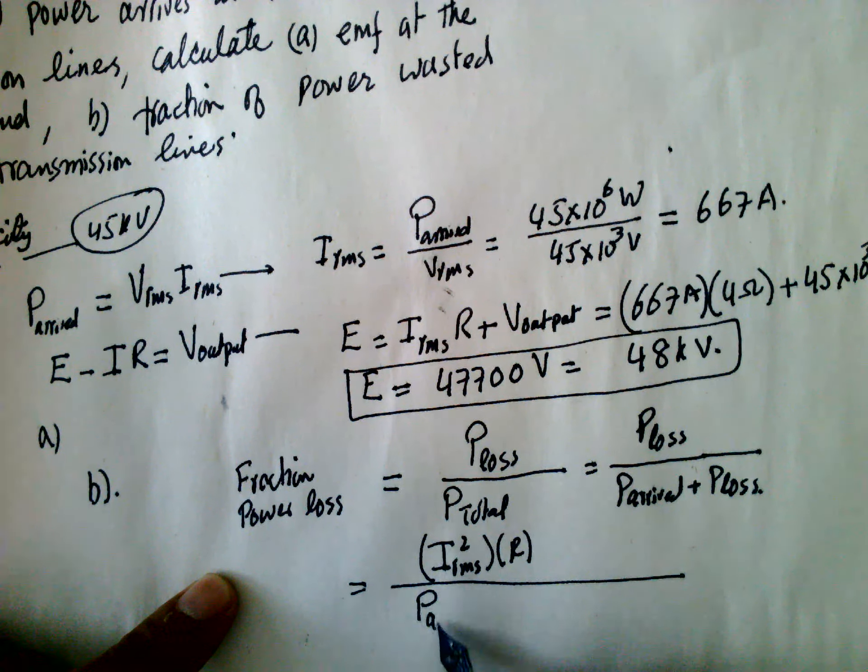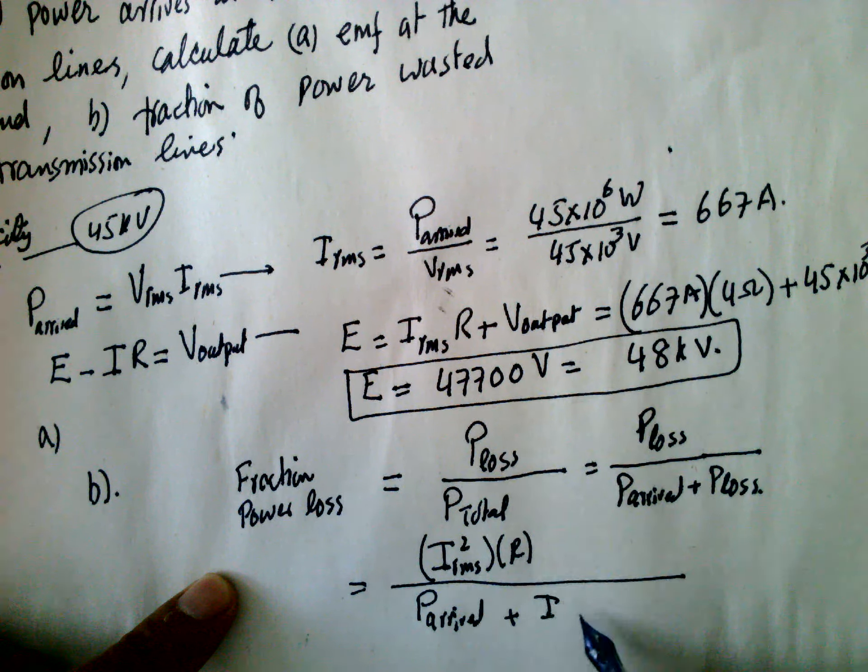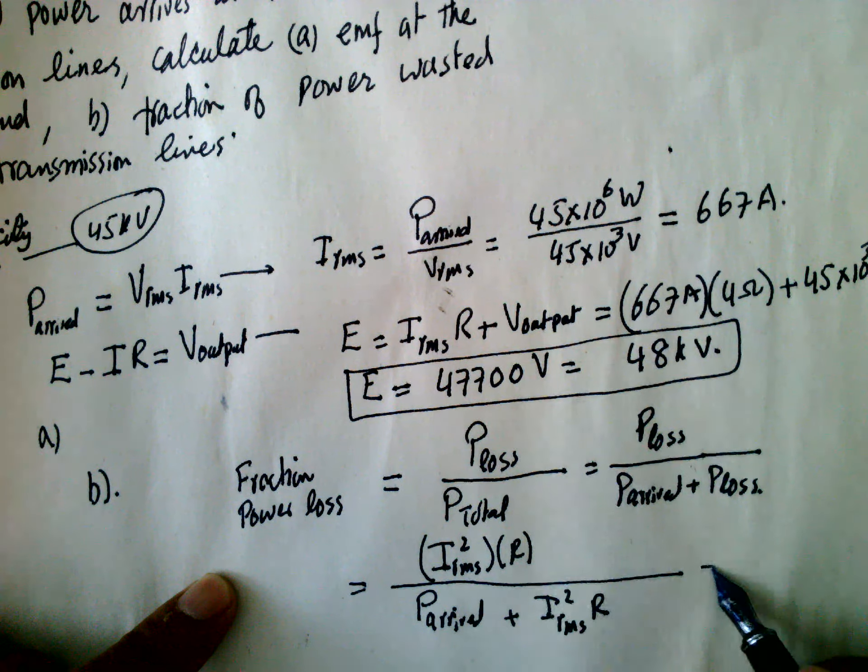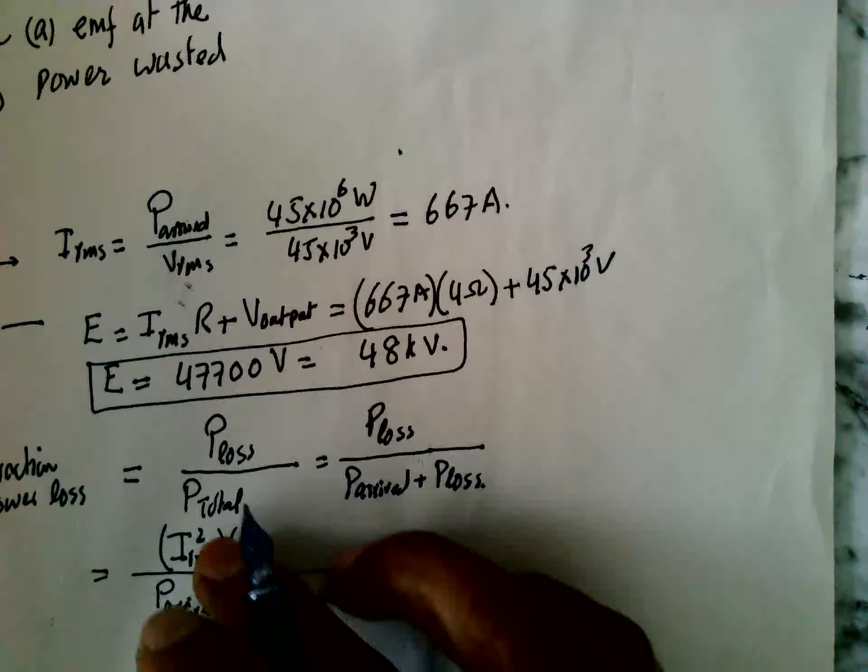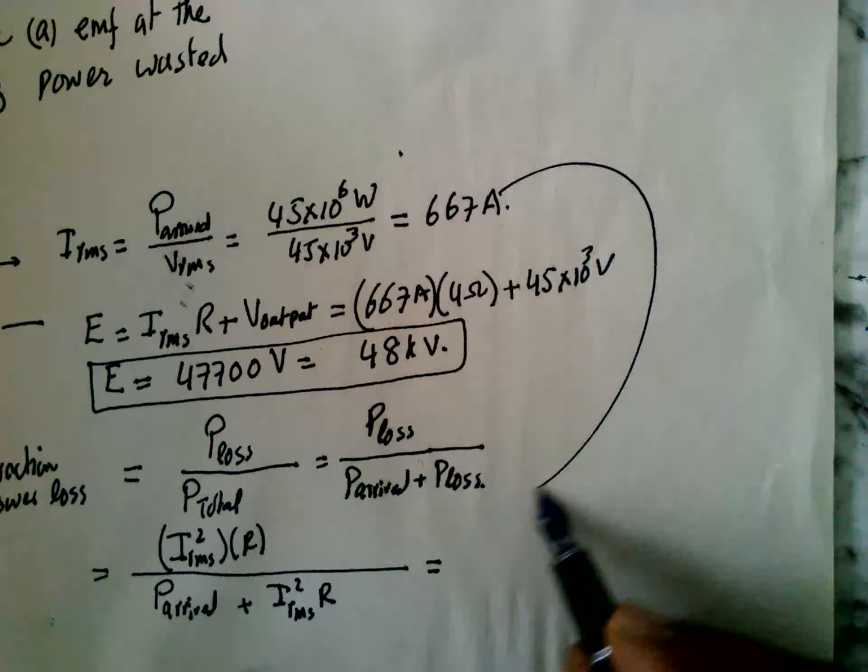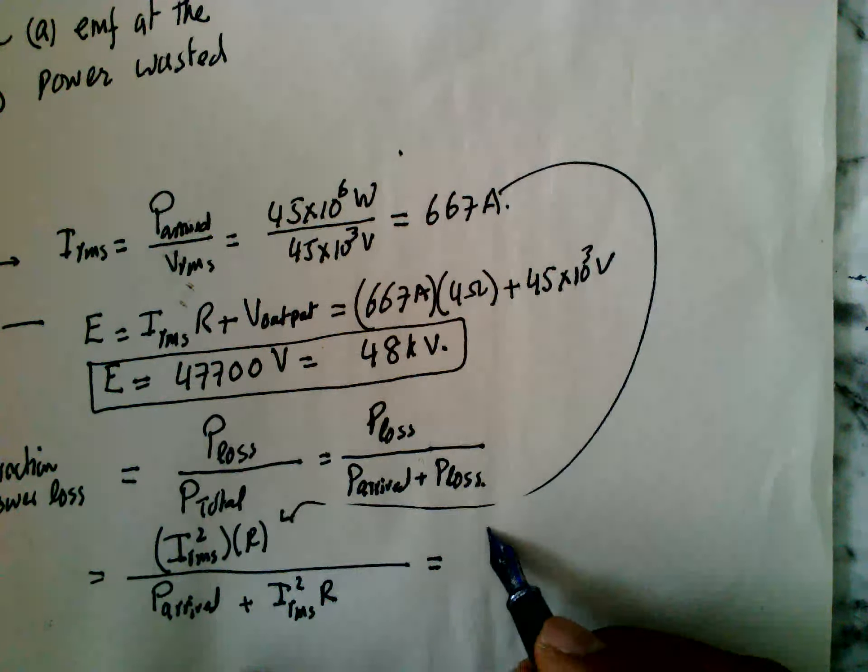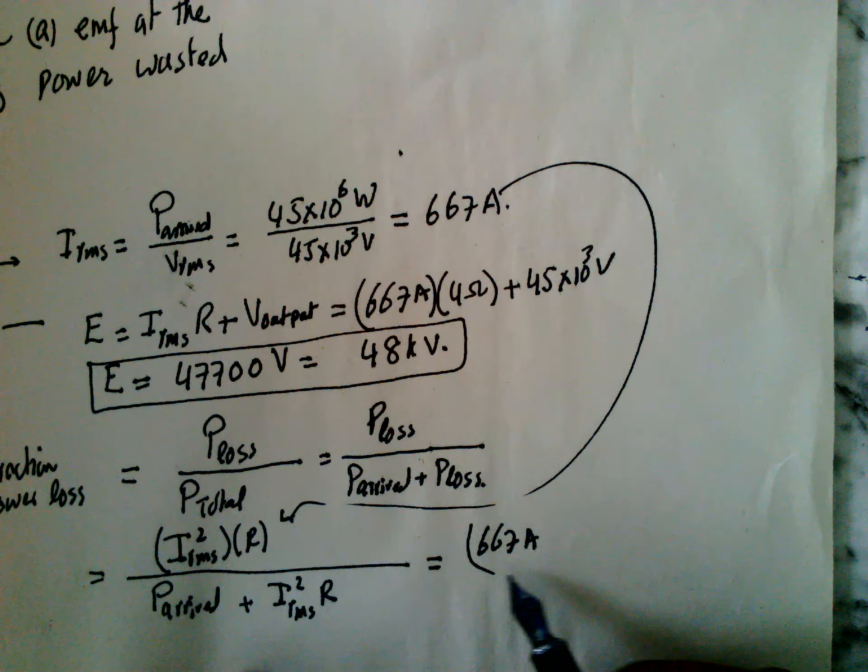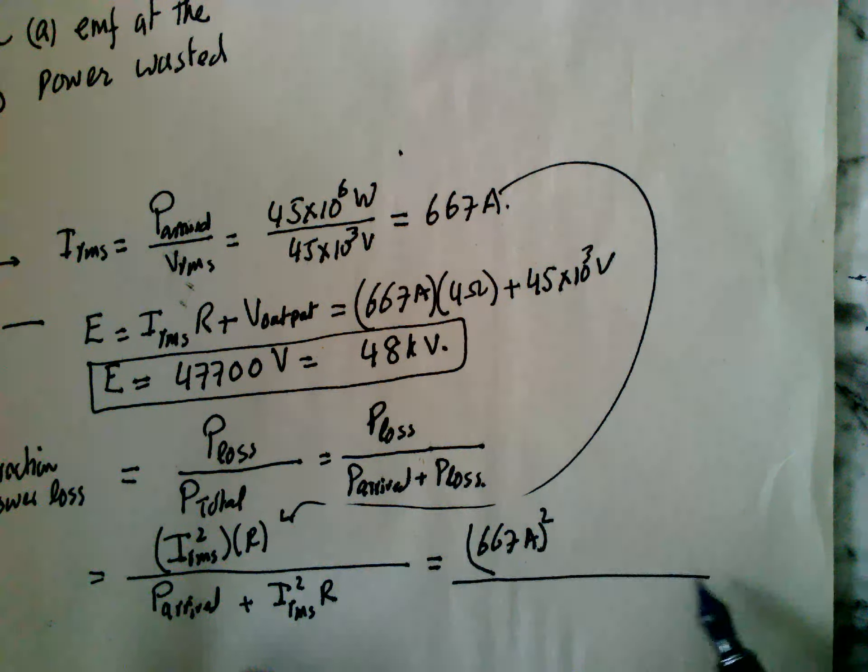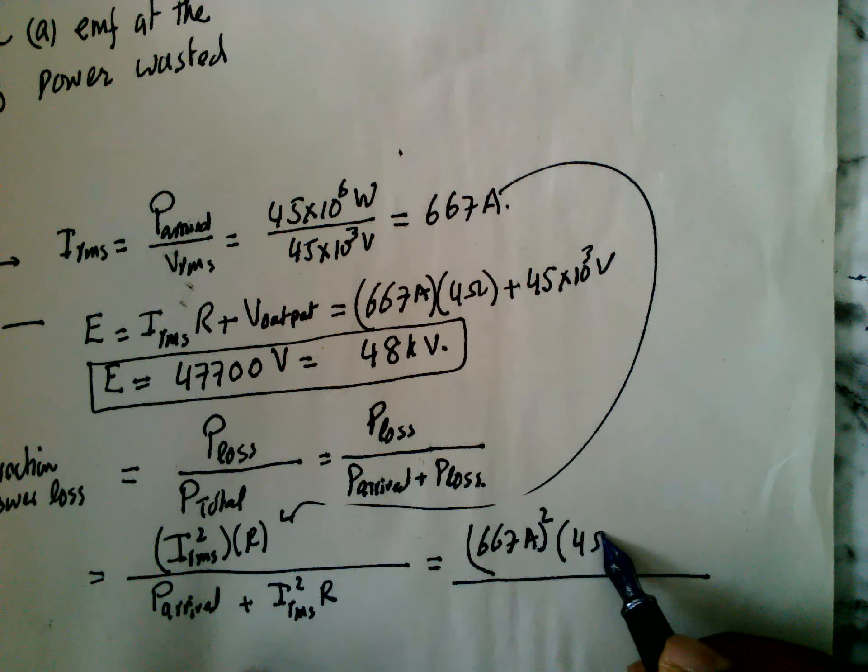So P_arrived plus I_rms squared R, which is equal to this value: 667 amperes whole squared multiplied by 4 ohms.